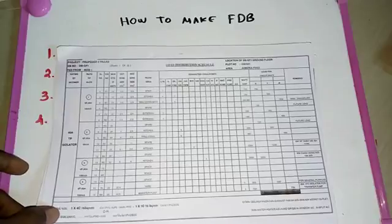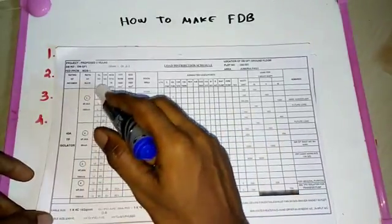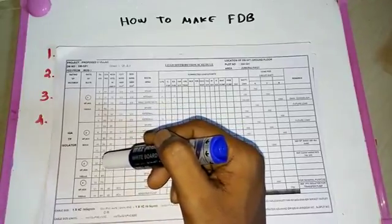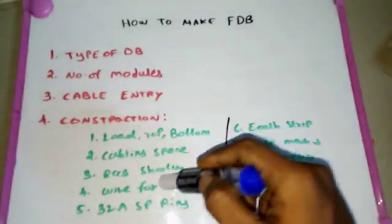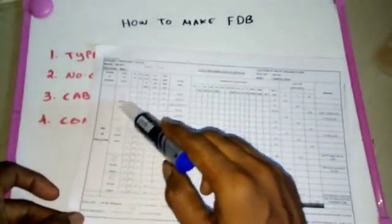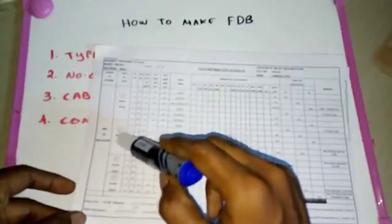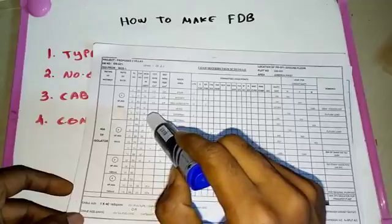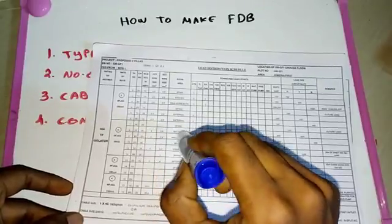For special DBs, we should not short more than three ELCBs together. Regarding wire size: if shorting more than two ELCBs, use a 16mm wire. If using a single ELCB, a 10mm wire is sufficient.